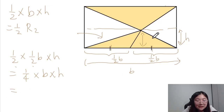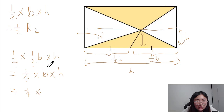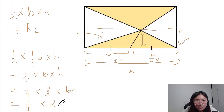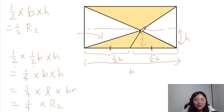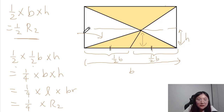This base times height is the same as length times breadth, which is the area of the rectangle below. So the smaller triangle is actually just half of the bigger triangle below. The bigger triangle below was already half of the rectangle below, so our smaller triangle here is half of half of that rectangle.